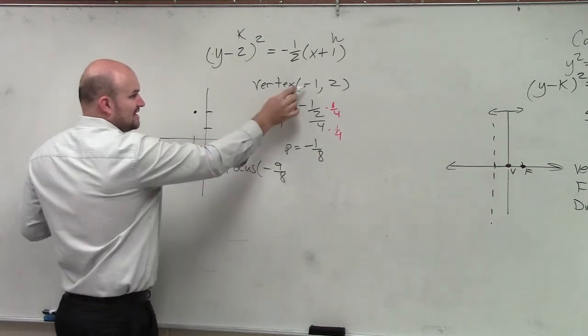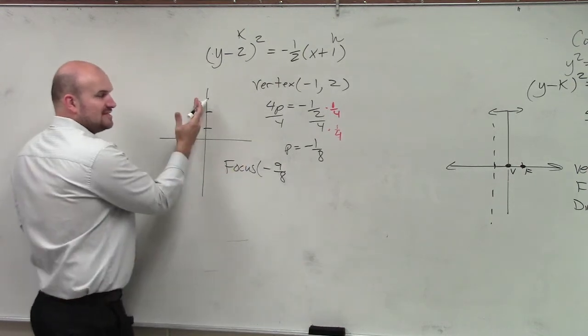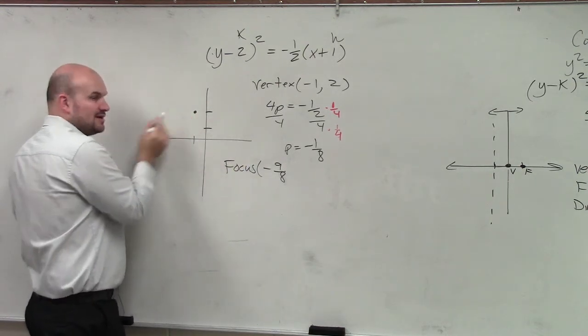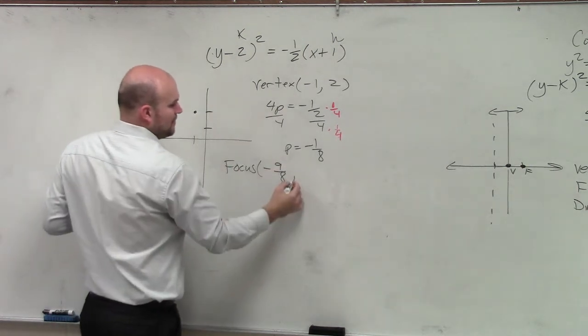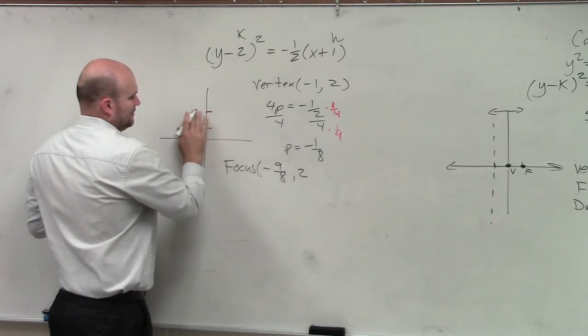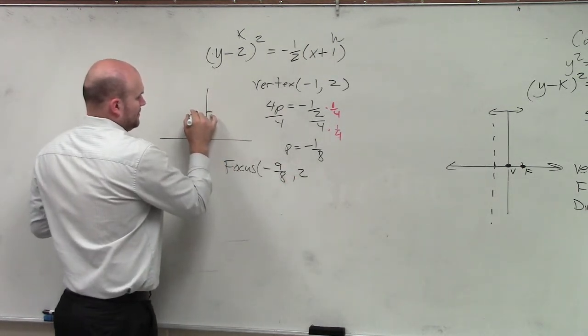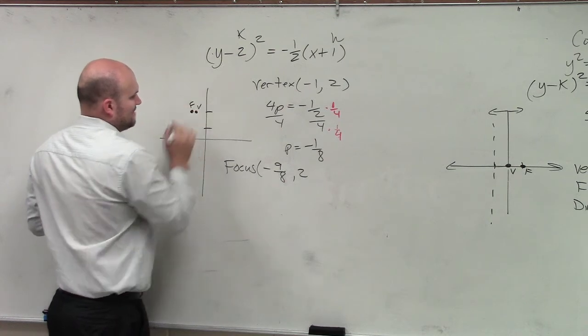Negative 9 8's. So my vertex is at negative 1. My focus is at negative 9 8's. I'm just an extra 8 over. Comma 2. So there's my vertex. There's my focus.